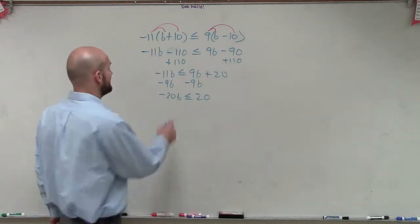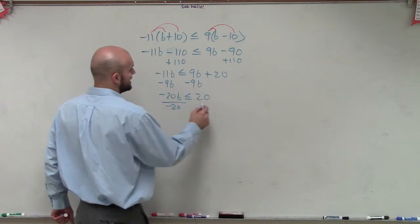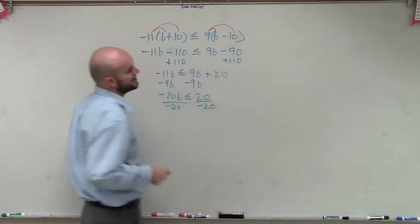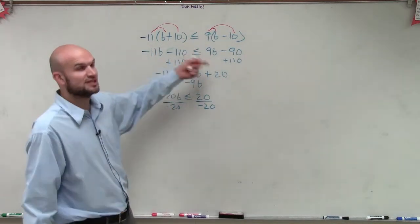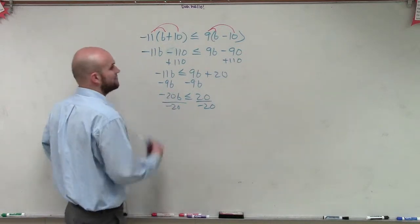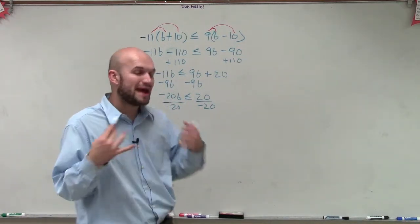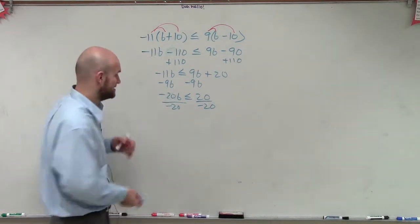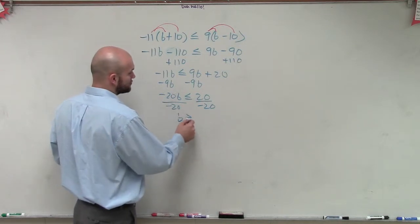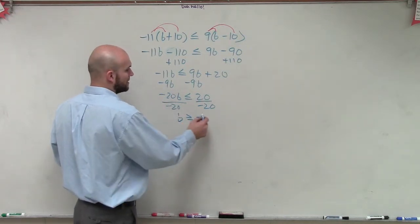So now what I need to do is solve for b. So I need to divide by negative 20. And this is where it becomes important that we need to make sure we understand we're not dealing with an equation but an inequality. Because whenever we multiply or divide by a negative number, we have to make sure we flip the sign. So now I'm going to have b is greater than or equal to negative 1.